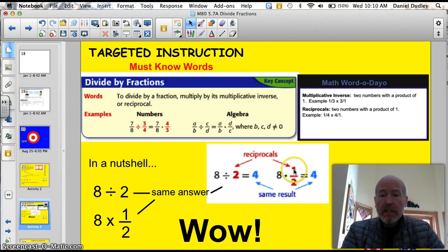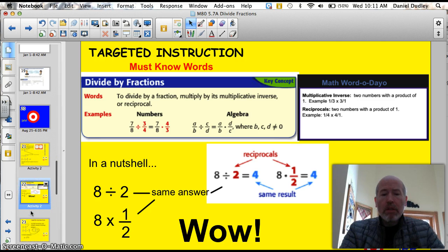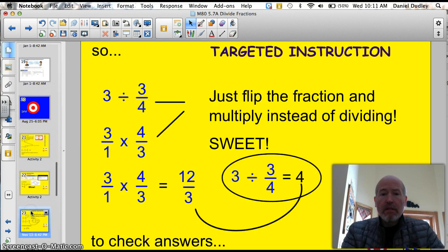8 times 1 is 8. 8 divided by 2, 4. Is that mind-blowing or what? So, what does that tell us? It tells us that 3 divided by 3 fourths. If we don't want to divide those fractions, we don't have a calculator. Flip it. Flip the fraction and multiply instead of dividing.